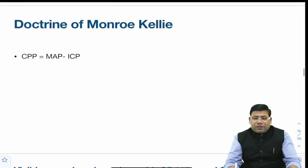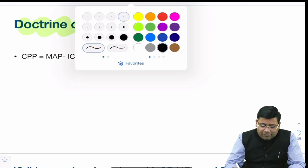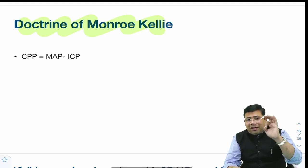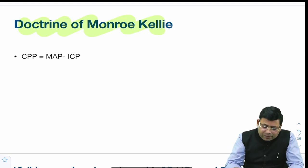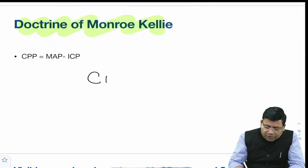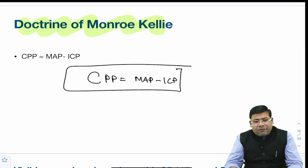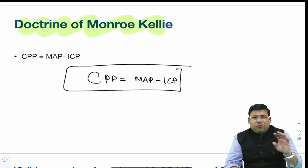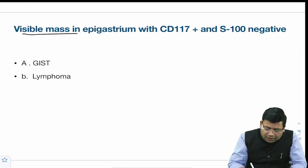There was a direct question on the Monro-Kellie doctrine. It states that the skull is a closed vault; any addition to its contents is managed by egress of CSF and venous blood. The equation is: CPP = MAP − ICP. The question could give MAP and ICP to find CPP, or give CPP and MAP to find ICP — a very straightforward question.